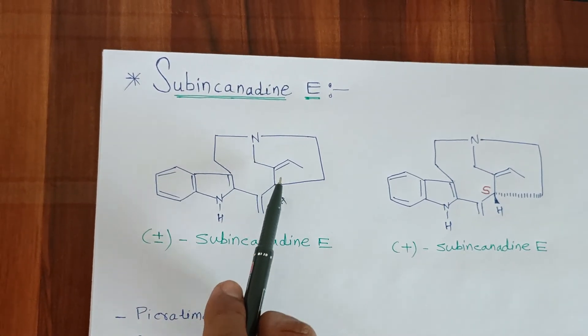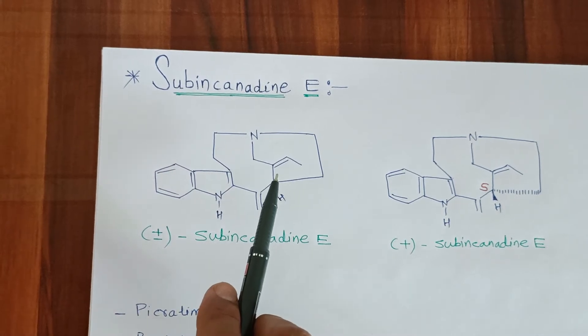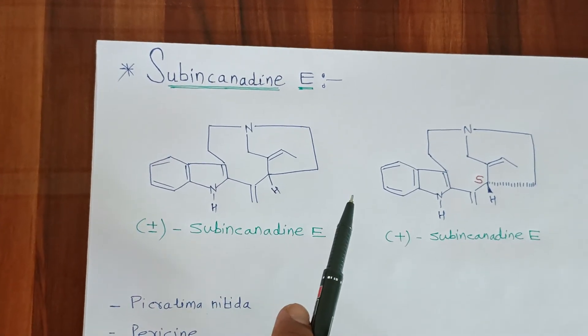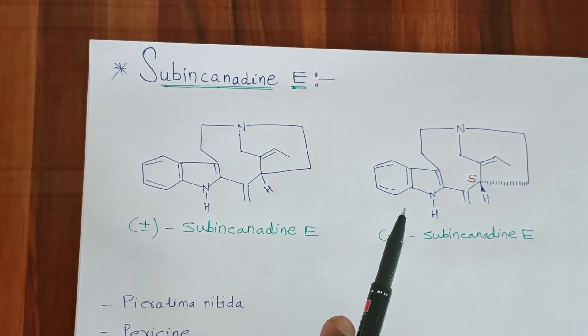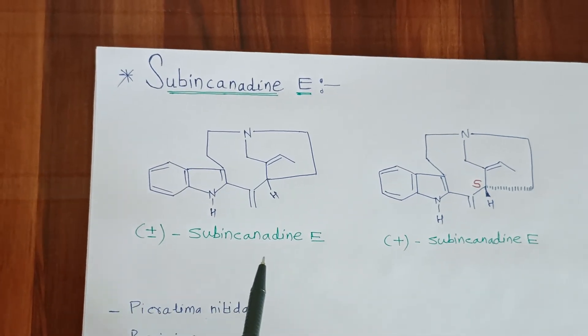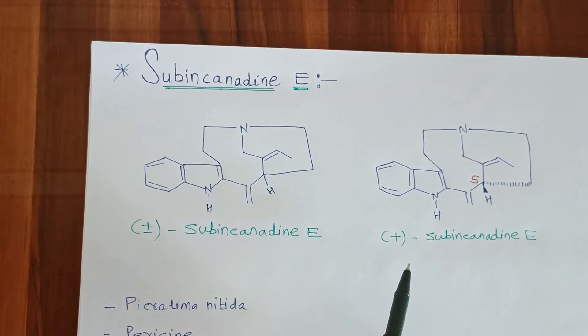There is also presence of two double bonds in the molecule. So, these are the structural features of Subincanadine E, that is (±)-Subincanadine E and (+)-Subincanadine E.